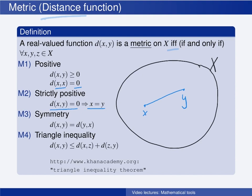Finally, the distance function has to satisfy the triangle inequality. What the triangle inequality says is that if you go from x to y through an intermediate point z, then the total distance going first from x to z and then from z to y is always greater than or equal to the distance going directly from x to y.